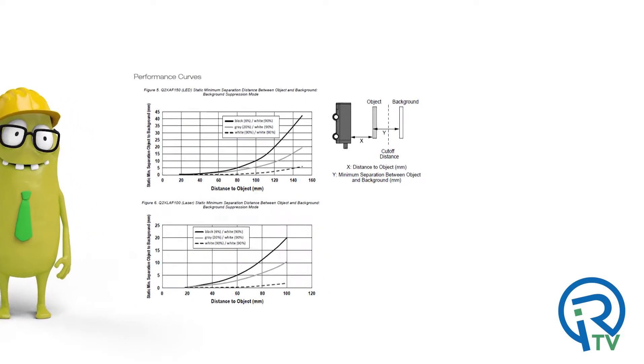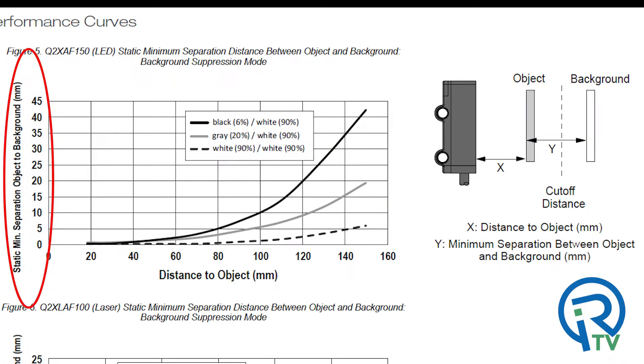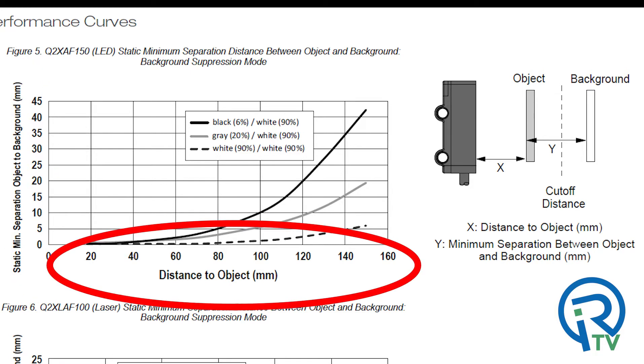These two charts show a static minimum separation distance between object and background. These are really helpful to determine the correct sensor and sensing distance for an application. The values on the Y axis show the separation distance from object to background. The X axis shows the distance of the target.